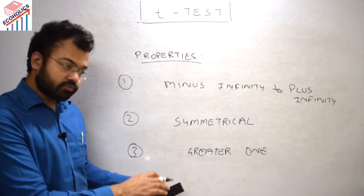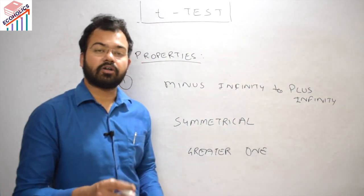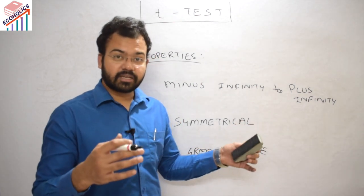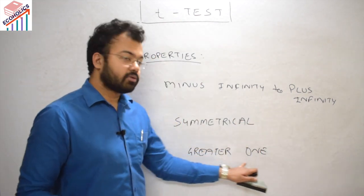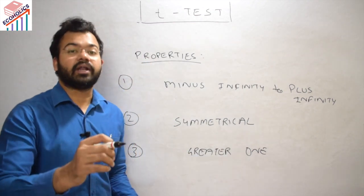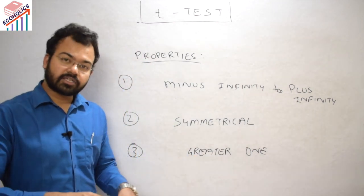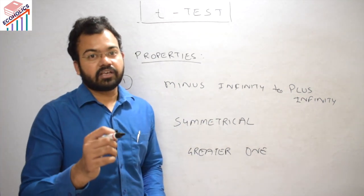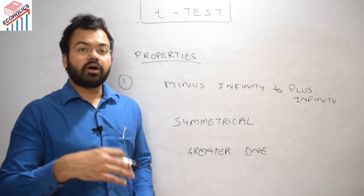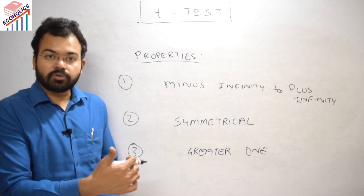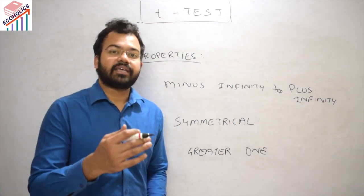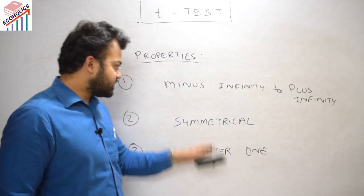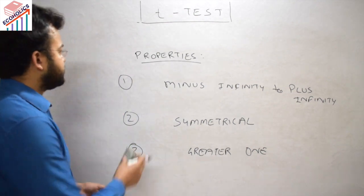If the variance approaches 1, it means it is the same as the standard normal distribution. Whenever the sample size approaches or nears 30, this variance is closer to 1. At sample size 30, the standard normal distribution equals the t-distribution. If you go beyond 30, you are taking large samples, and the t-distribution does not apply to large samples. These are the three important properties of the t-test.